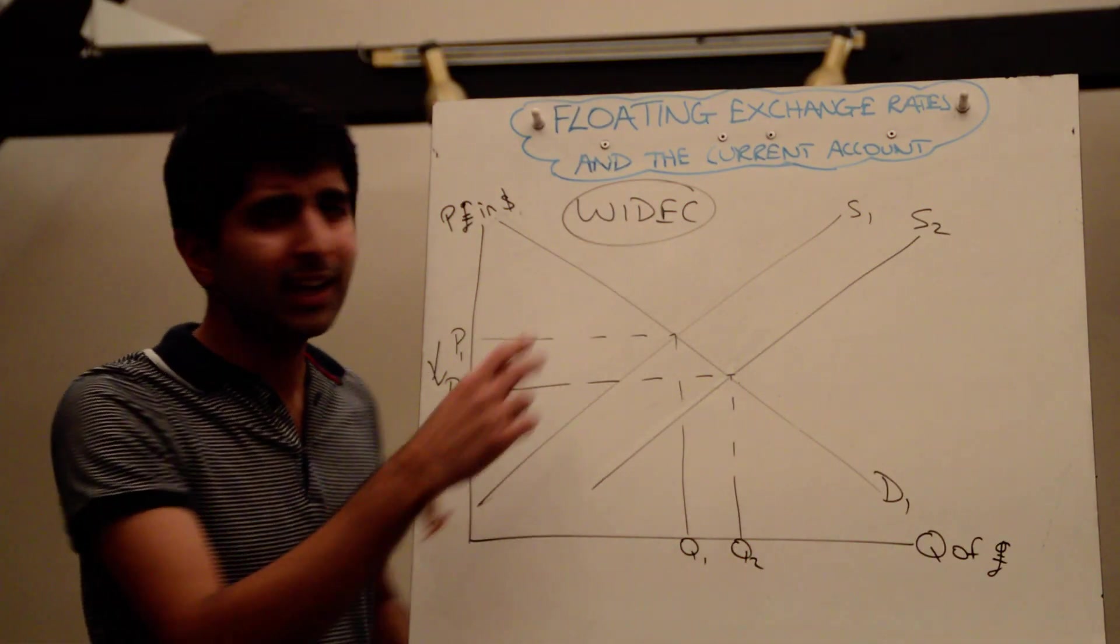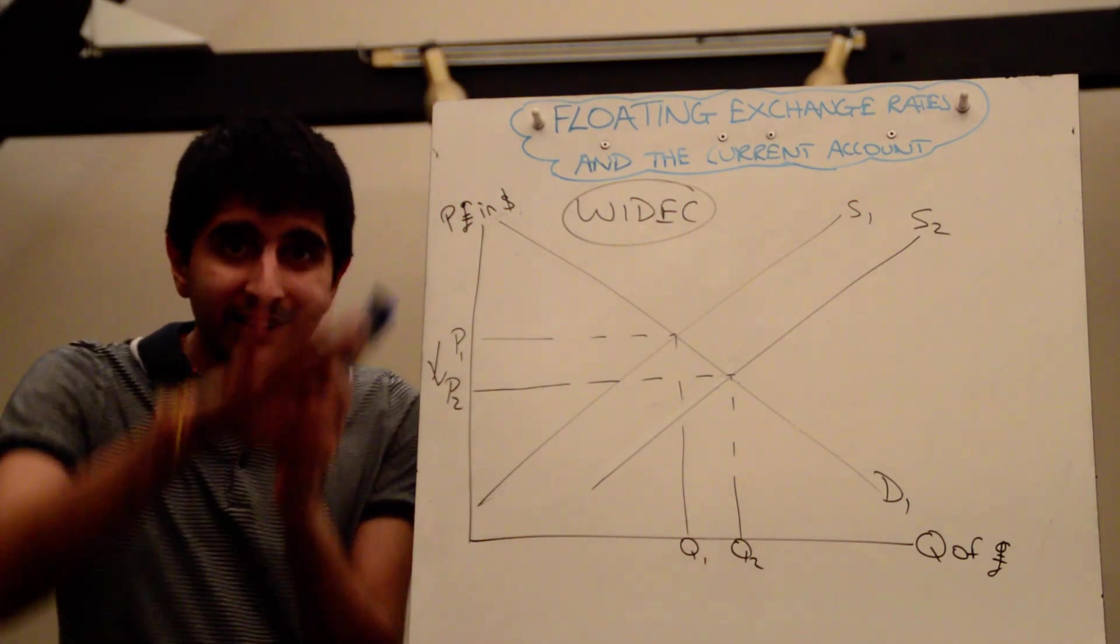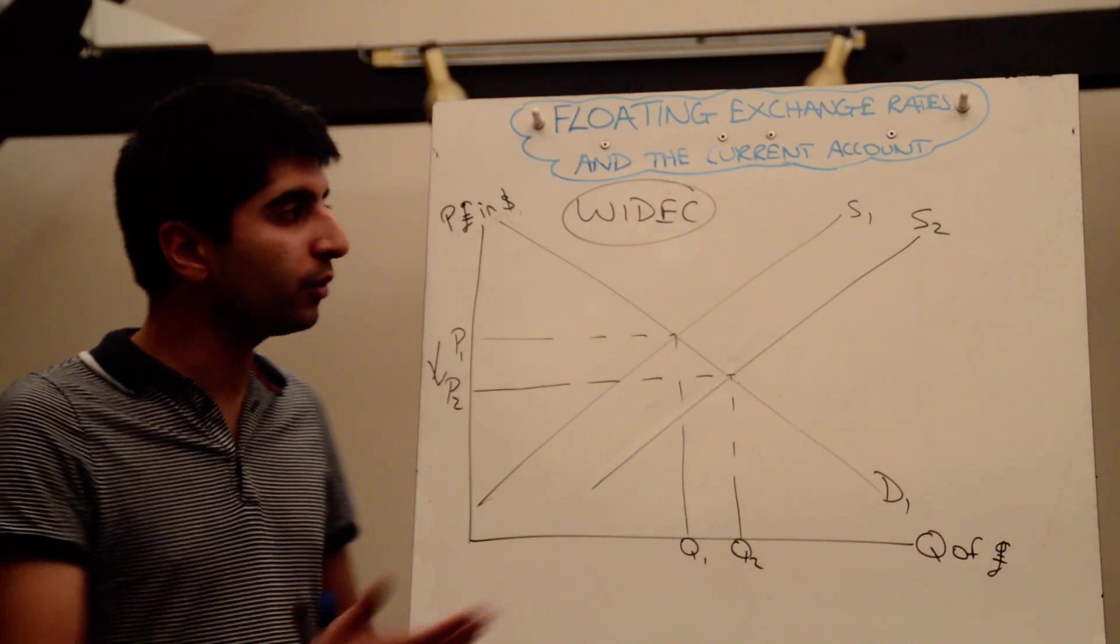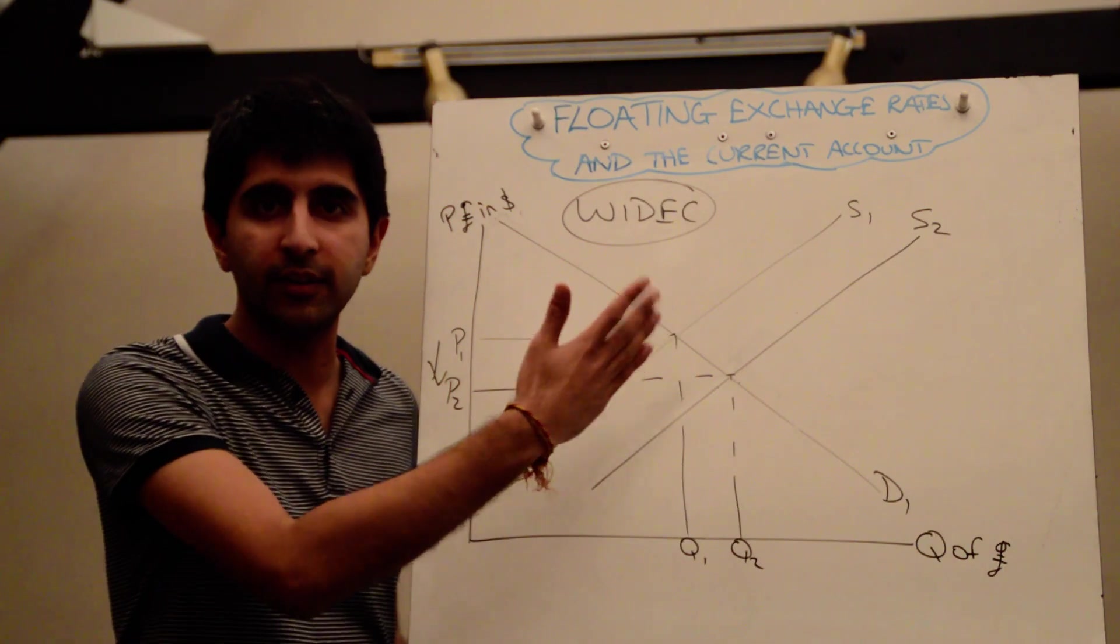So in that sense, because the UK suffered a current account deficit, downward pressure is put on the exchange rate because it means overall imports are increasing more than exports, overall the supply of the currency is increasing.